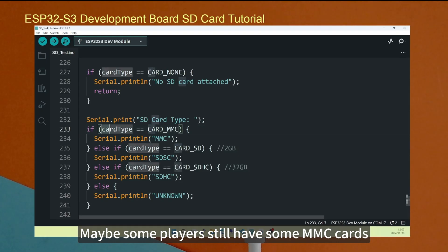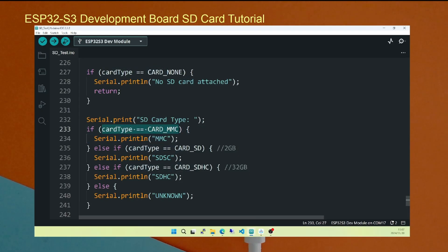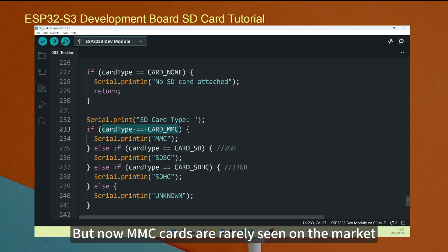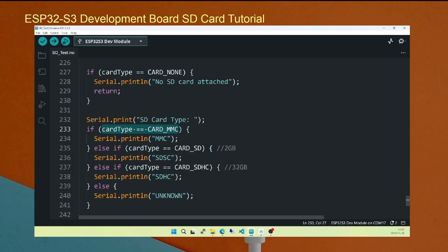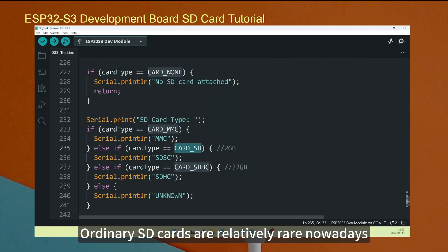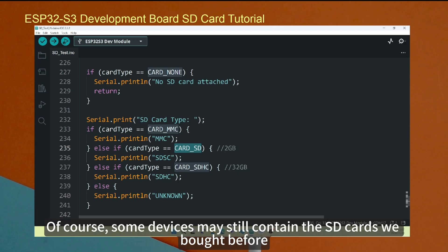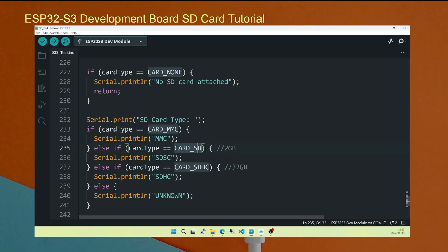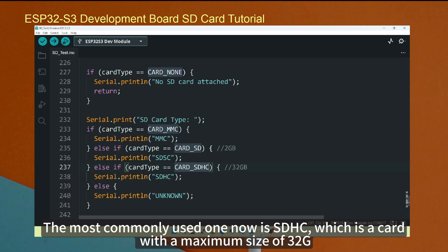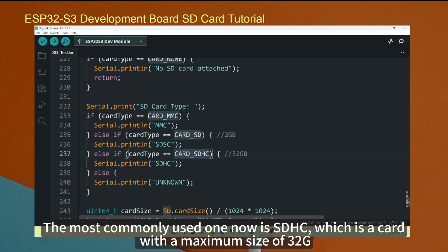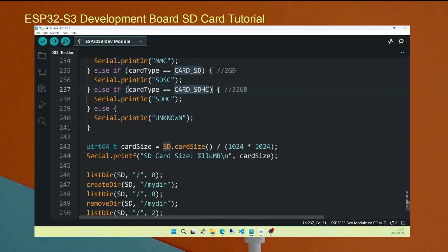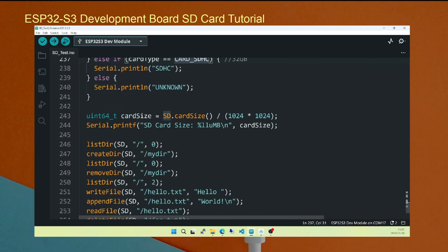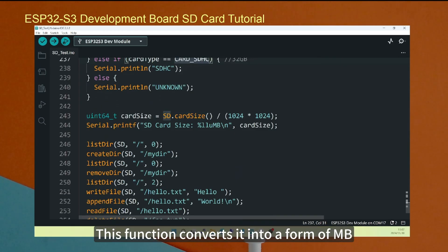Maybe some players still have some MMC cards, but now MMC cards are rarely seen on the market. Ordinary SD cards are relatively rare nowadays. Of course, some devices may still contain the SD cards we bought before. The most commonly used one now is SDHC, which is a card with a maximum size of 32GB. Here are the card sizes.